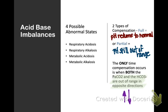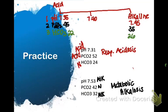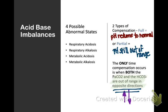To recap: the four abnormal states are when the body is not yet compensating — you'll see either just the respiratory or just the metabolic component off, with the other normal. But with these compensation mechanisms, the body will try to compensate — either fully, where the body has done its job, or partially, where the pH is still out of range.